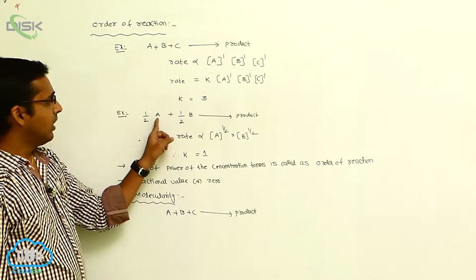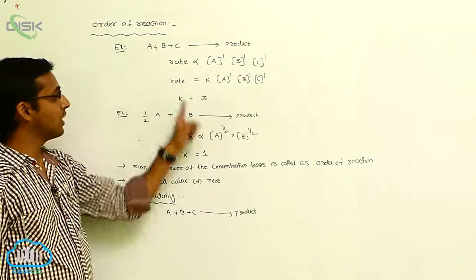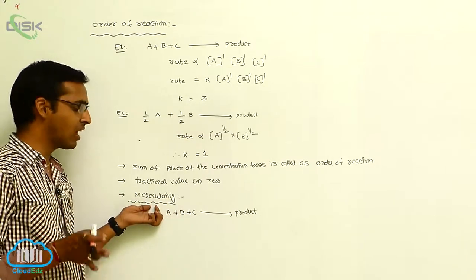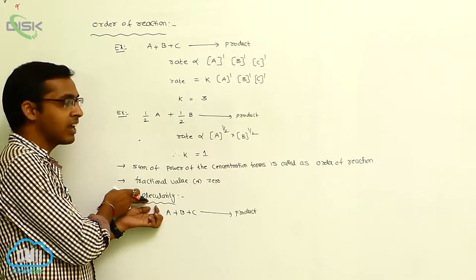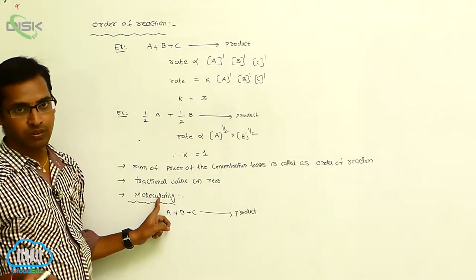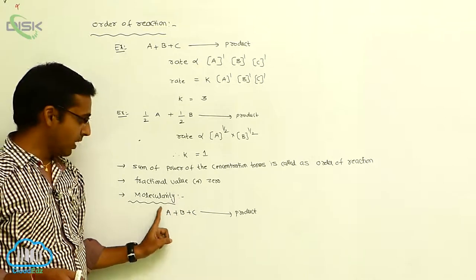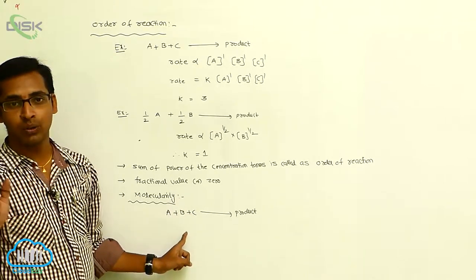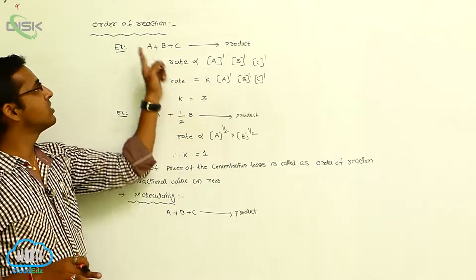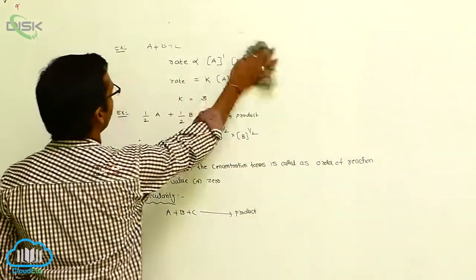For example, if two reactants are involved, the molecularity is two but the order of reaction may be one. The molecularity determination is a direct process, but the order of reaction is an experimental process. Molecularity may not be zero — zero values are absent — but order of reaction can be zero or fractional. Molecularity starts from one, two, three, four, and so on.